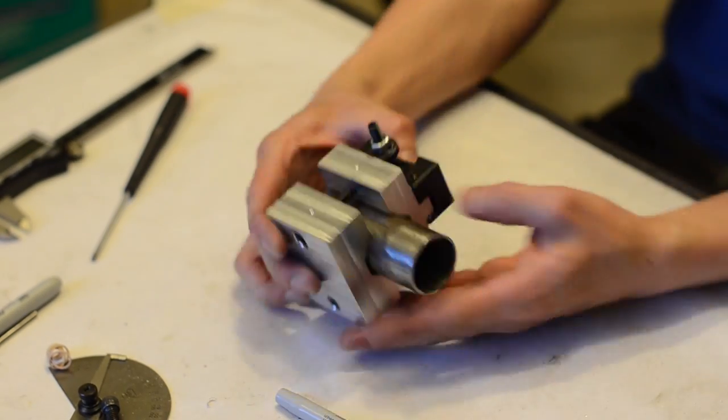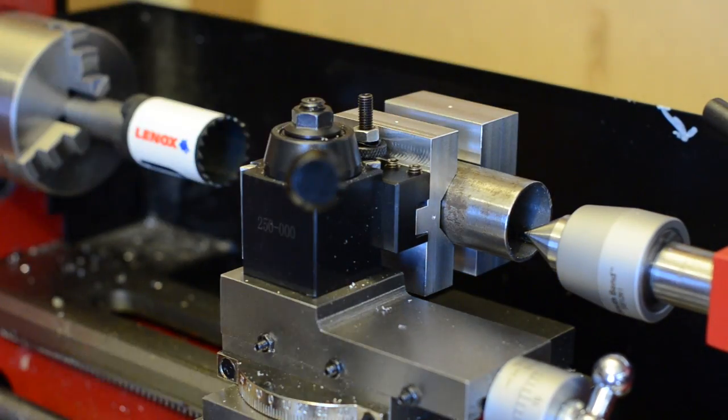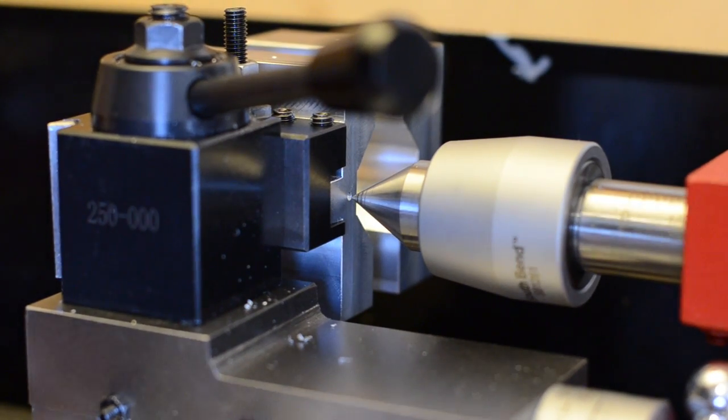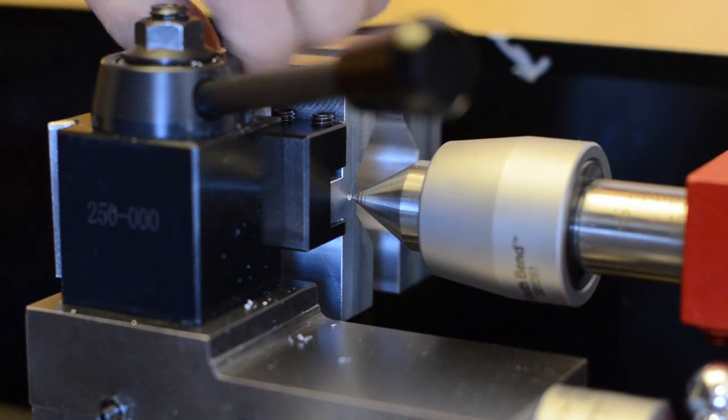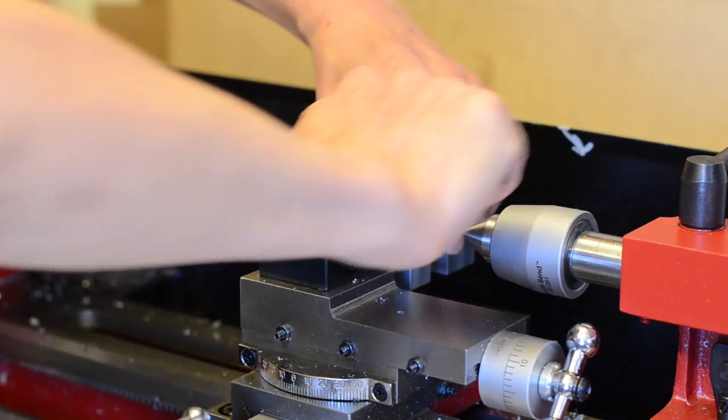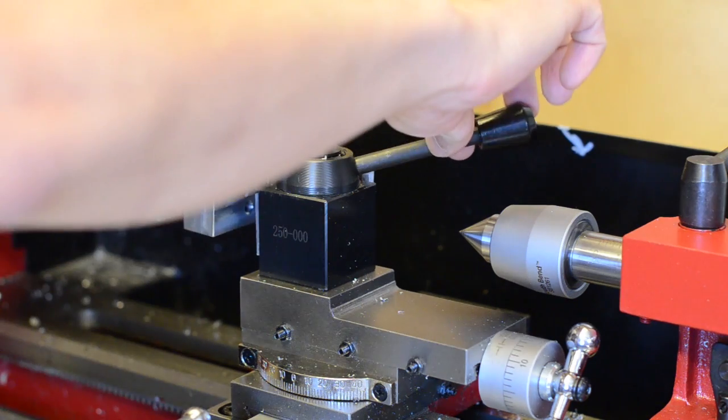Alright, we are almost there. I'm putting the fixture on the facing side of the tool post and I'm aligning that little register hole I made with the live center on the tail stop. Now I'm switching sides, and this is the actual side that we will miter the tube on.